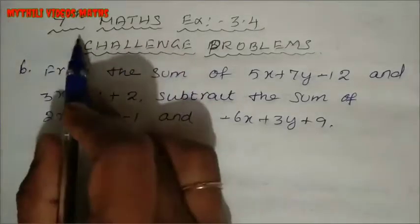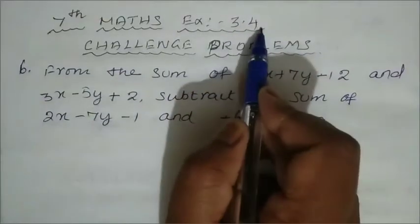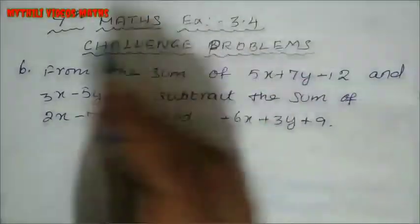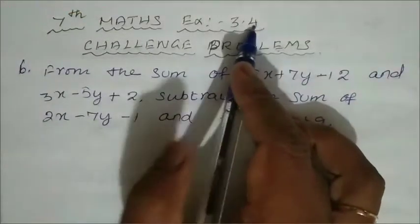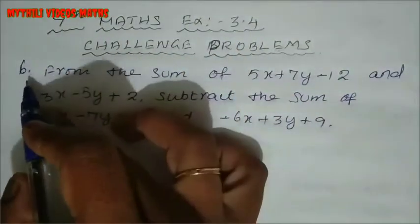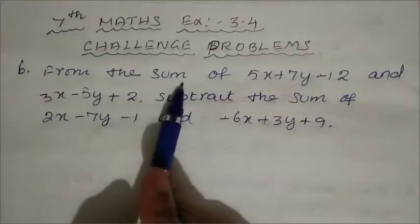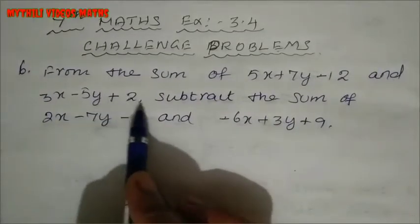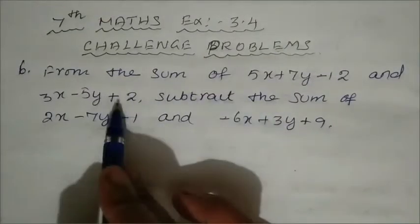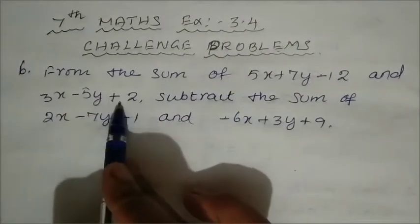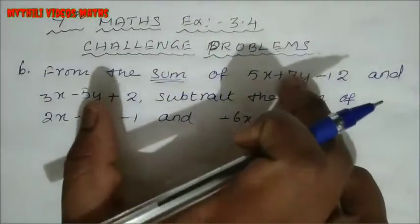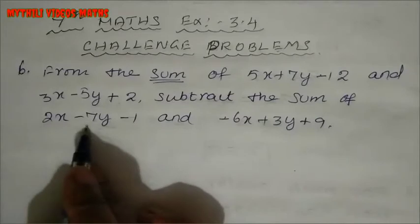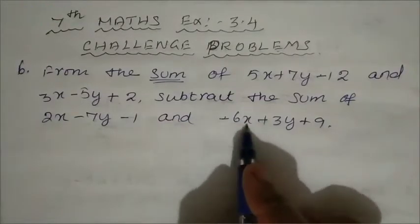Hi students, I am Mike Lee. This is 7th Standard Math, Exercise 3.4 — the challenge problems. We have completed 5 sums so far. Now we are going to see the 6th sum. The 6th sum asks us to first add, and then subtract, the sum of two algebraic expressions.